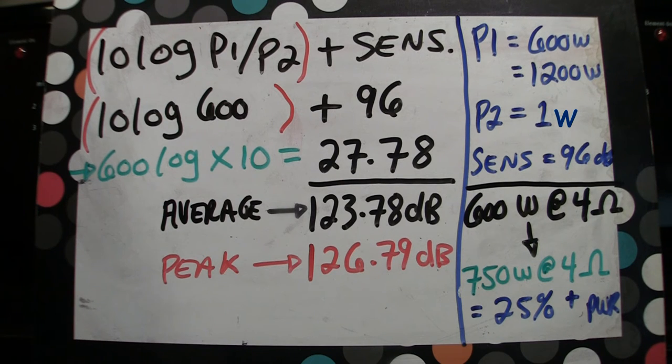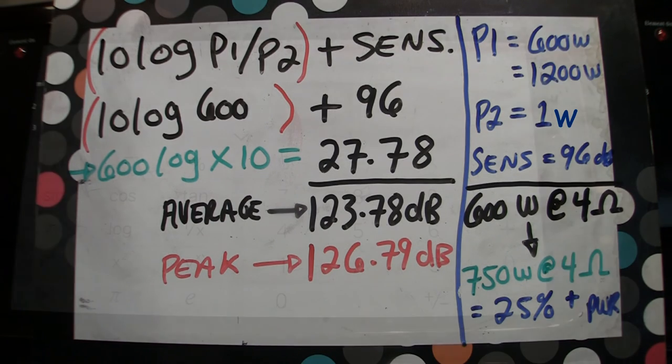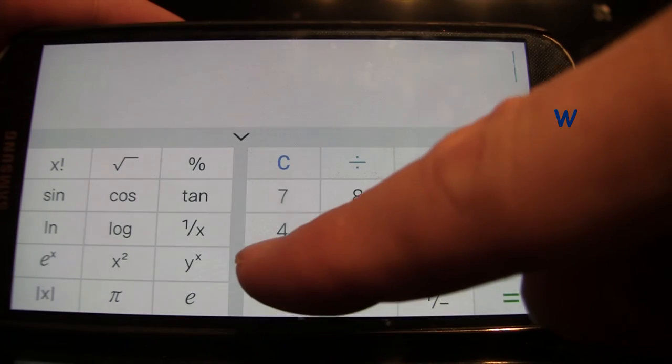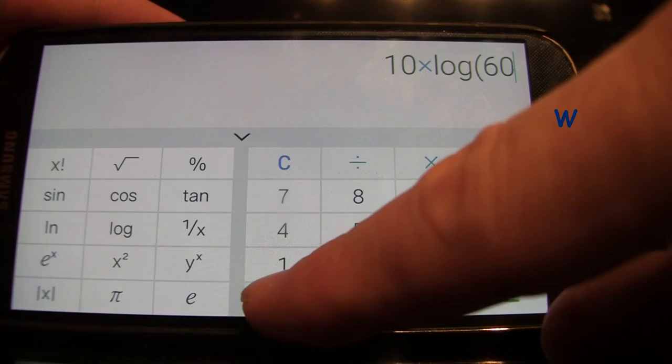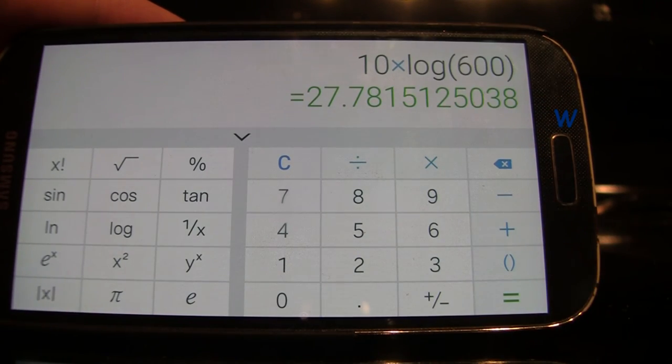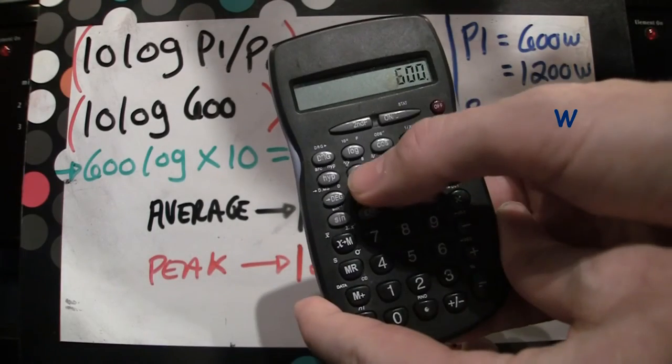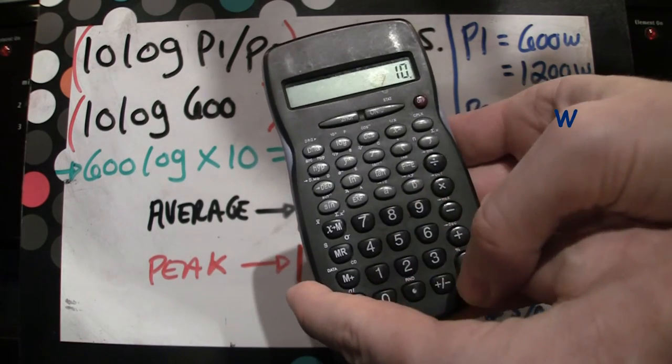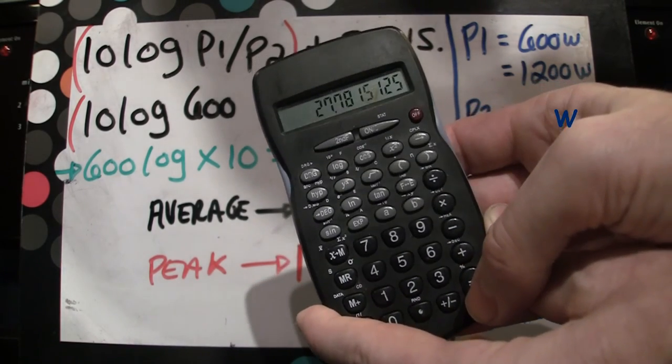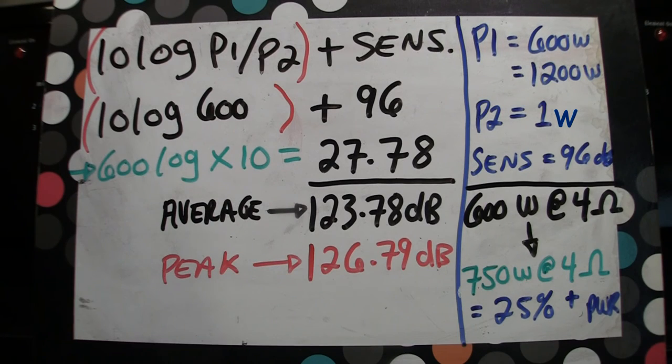Do the brackets first. The way to enter it into a cheap scientific calculator depends on what scientific calculator you have. Some of them on some smartphones, you just enter 10 log 600 and you come up with your answer, which is 27.78, or you have to enter it 600 log times 10 equals 27.78. If you get 27.78 with this calculation, you've done it right.